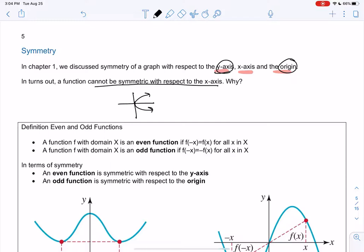So maybe like a sideways parabola would be symmetric about the x-axis, or a circle would be symmetric about the x-axis. The top and the bottom are the same.